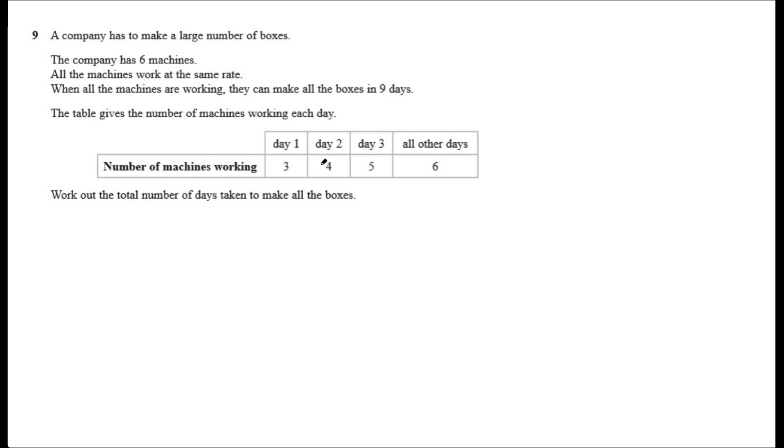Getting into this maths problem, we're talking about machine days. So if six machines are working for nine days—well, there's one machine working for nine days, that would be nine machine days. Two machines working for nine days, that would be 18 machine days. So we've got 6 times 9, this will give us 54 machine days of work to make the total number of boxes.